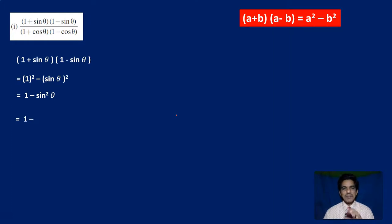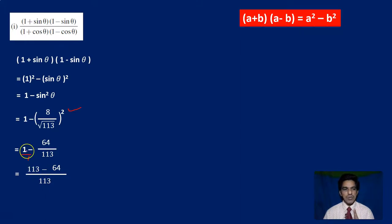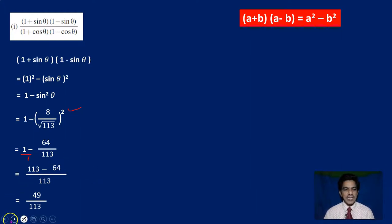Substituting sin theta equals 8 by square root of 113, we get 1 minus (8 by square root of 113) whole squared. This gives 1 minus 64 by 113. Taking LCM as 113, we get 113 minus 64 all over 113, which equals 49 by 113. So the numerator value, (1 plus sin theta)(1 minus sin theta), equals 49 by 113.